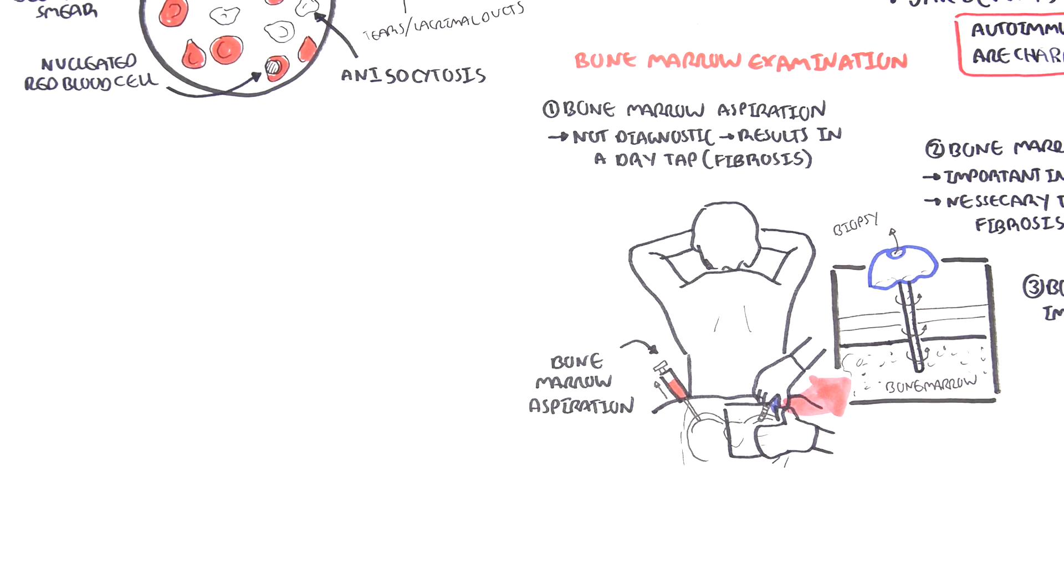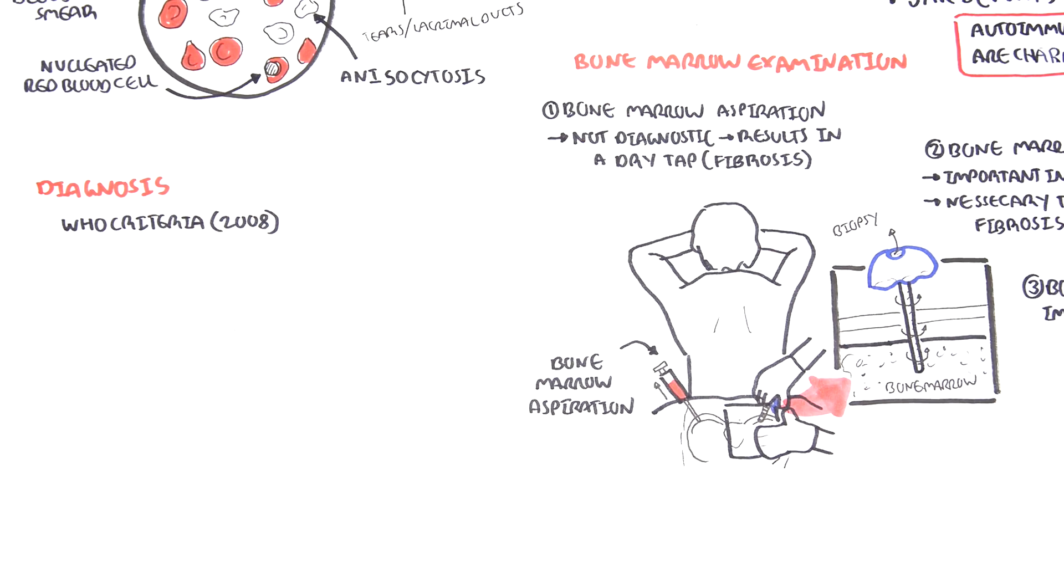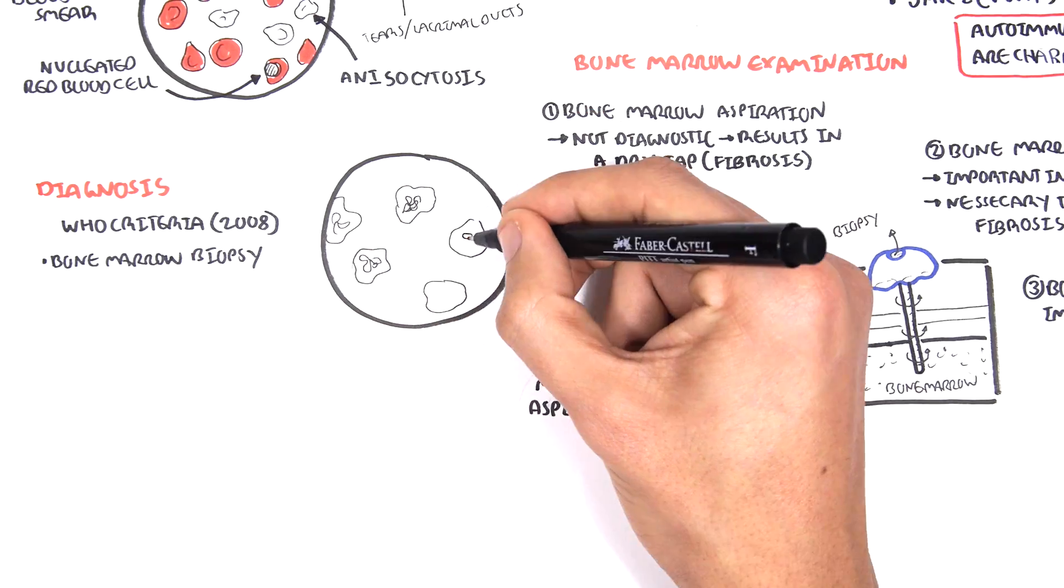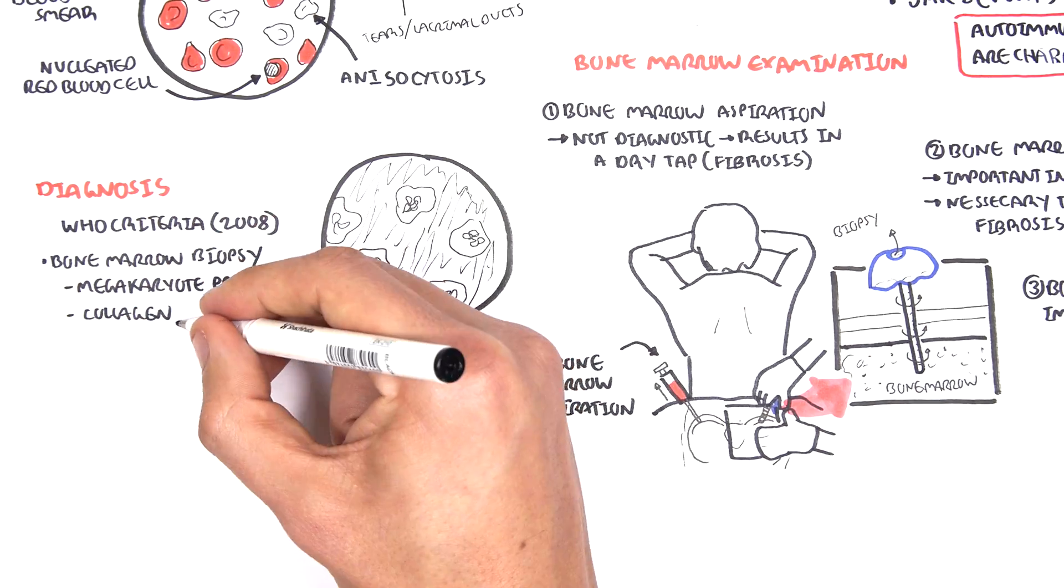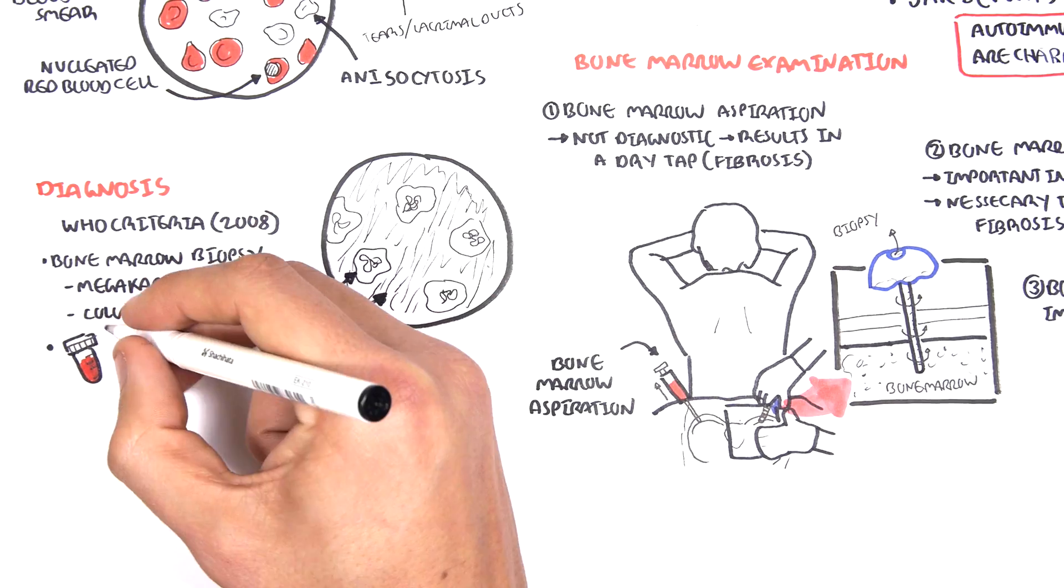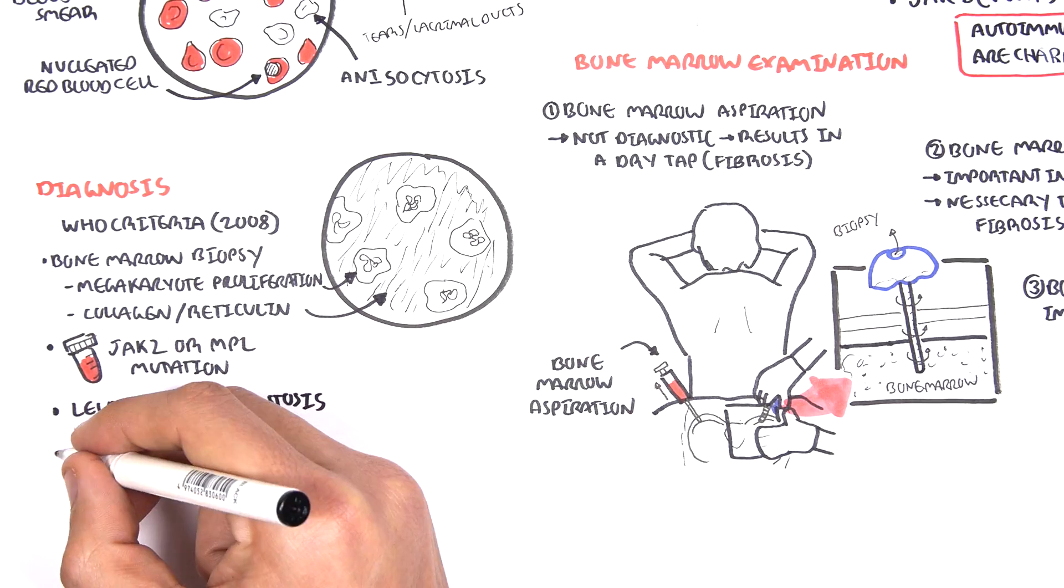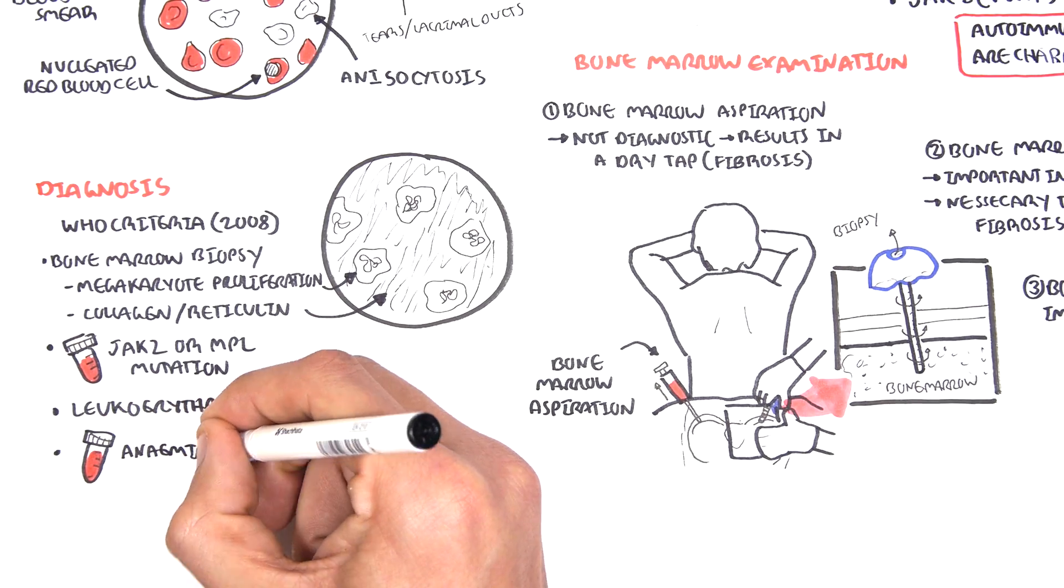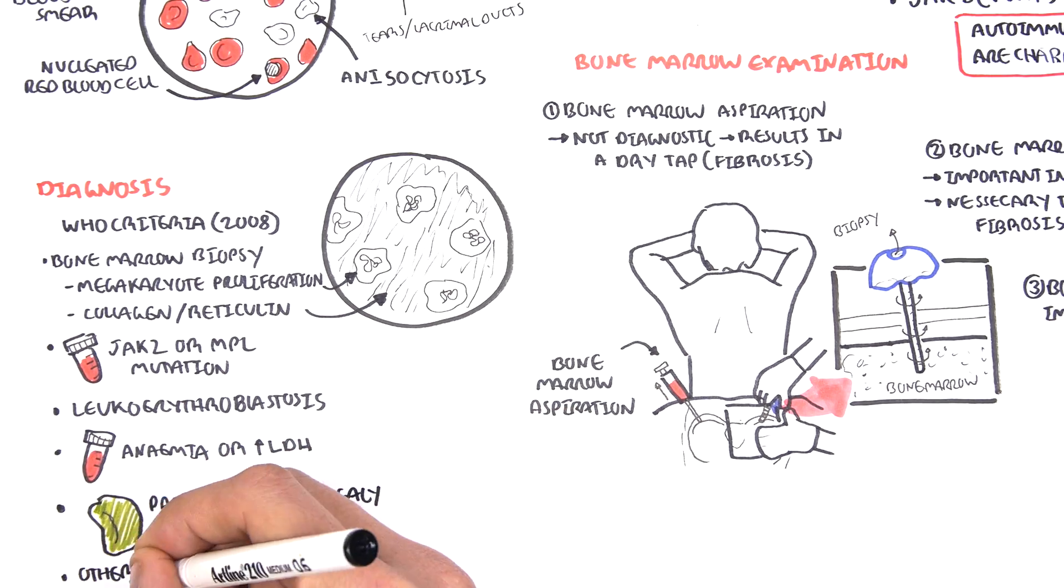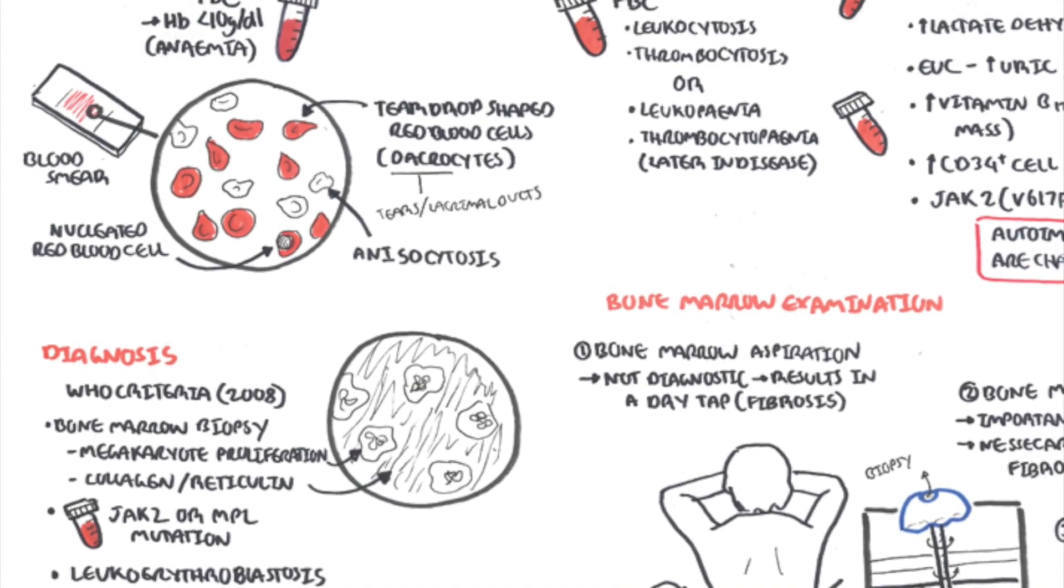The diagnosis of myelofibrosis is based on the World Health Organization criteria in 2008 and need to include most of the following listed. One, a bone marrow biopsy which shows megakaryocyte proliferation as well as collagen and reticulin deposition throughout. JAK2 or MPL mutation. There can be leucoerythroblastosis, signs of anemia, or an increase in lactate dehydrogenase, a palpable splenomegaly, and other differential diagnosis has to be ruled out. Not all of this have to be met in order to diagnose primary myelofibrosis but majority needs to be met.